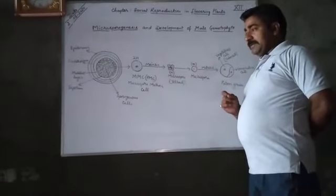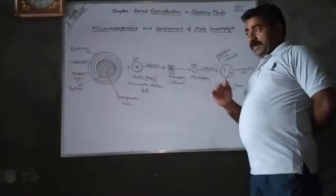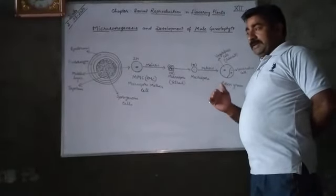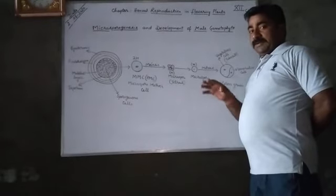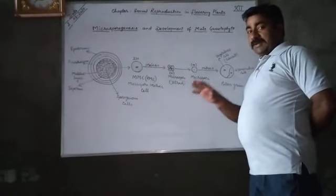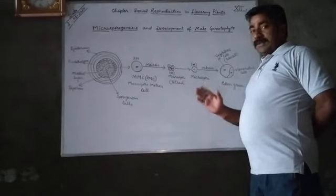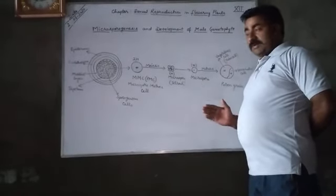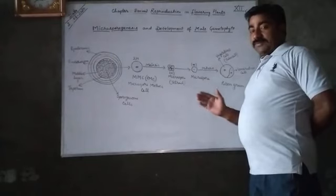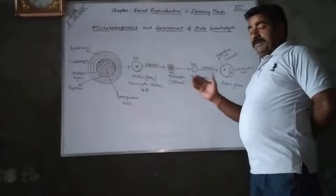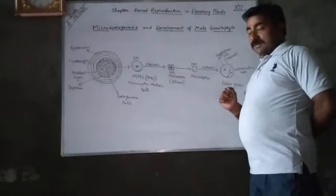In that lecture, I discussed that in the primitive stage, when the pollen sac or microsporangium is in the developmental stage, it consists of archesporial cells. Archesporial cells undergo repeated mitotic division to form two concentric layers of cells: the outer one is called parietal cells and the inner one is called sporogenous cells.